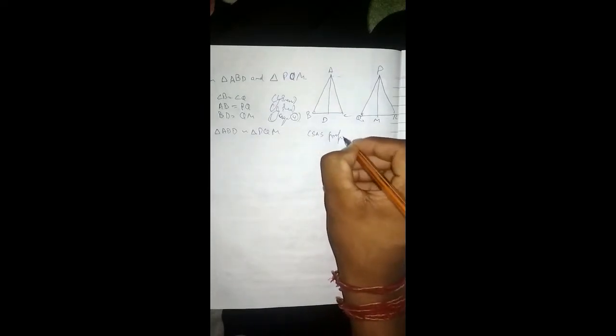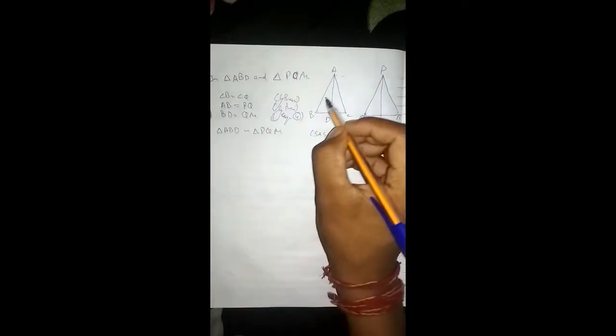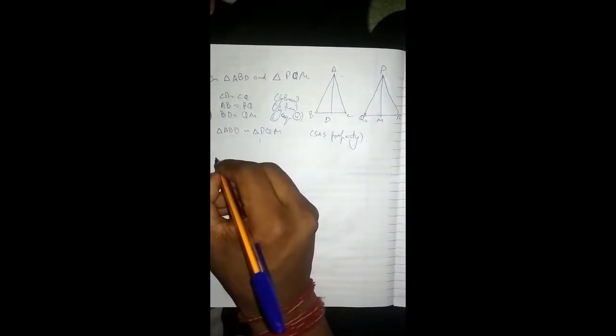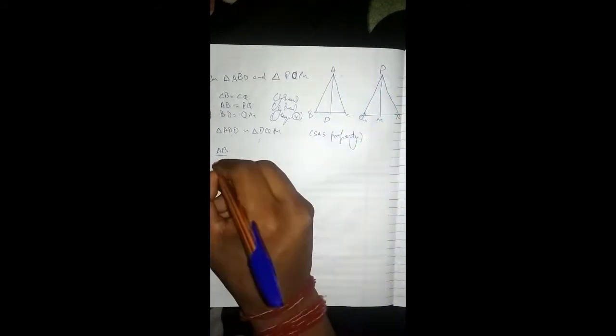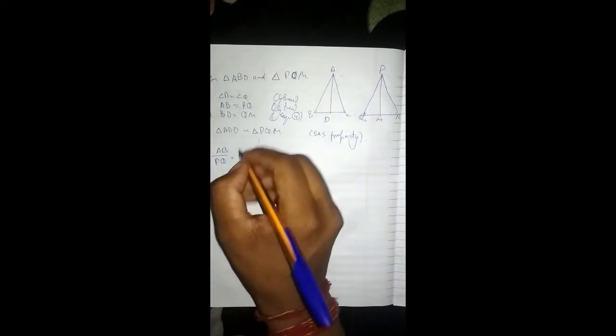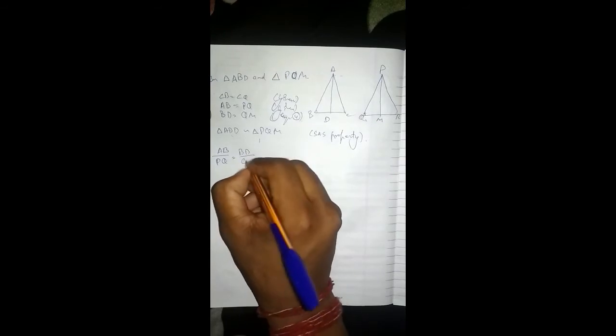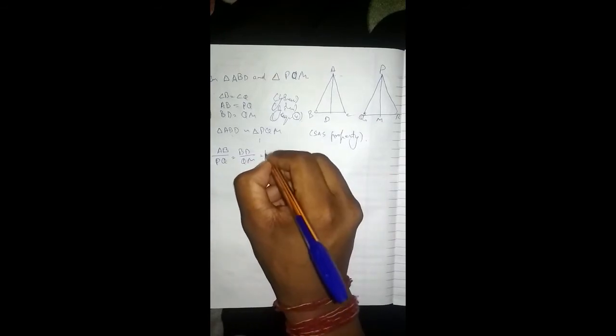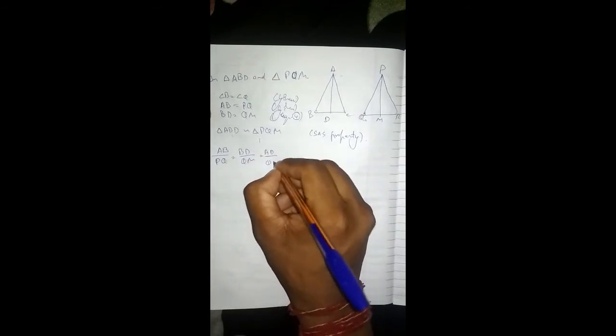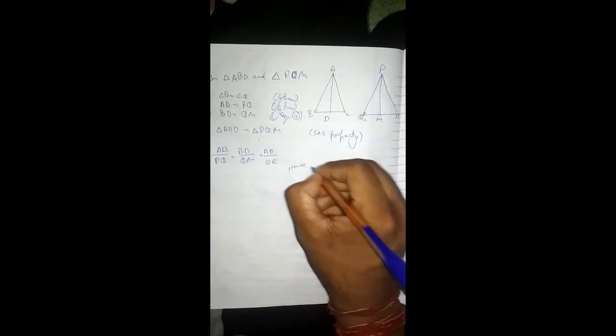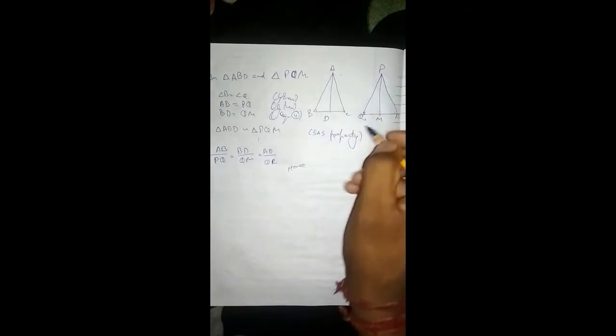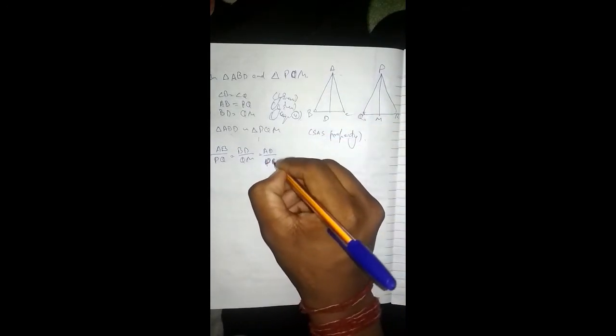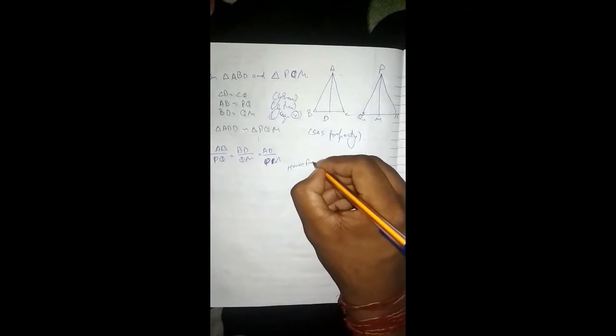By the property of similar triangles, AB upon PQ is equal to AD upon PM. This is approved.